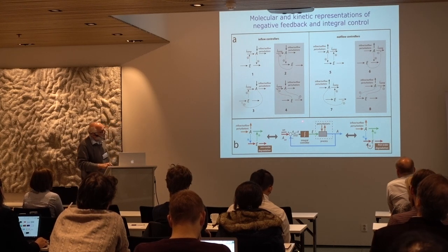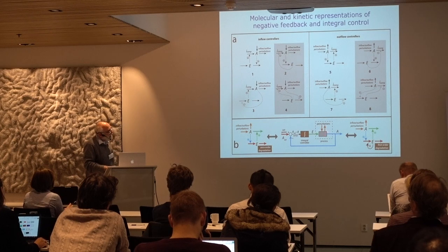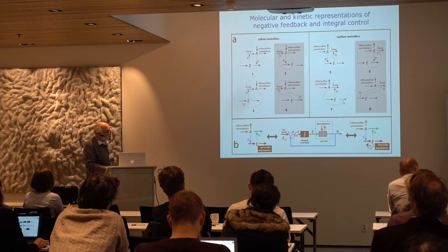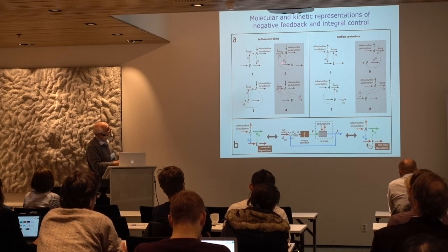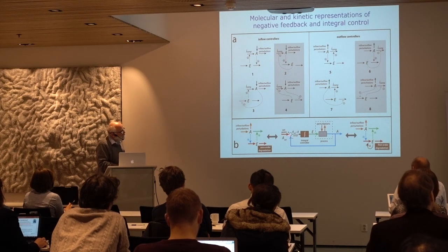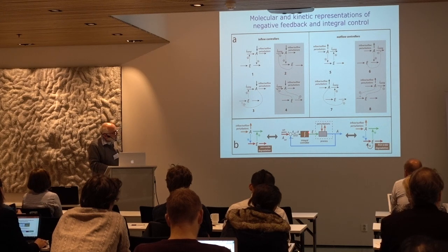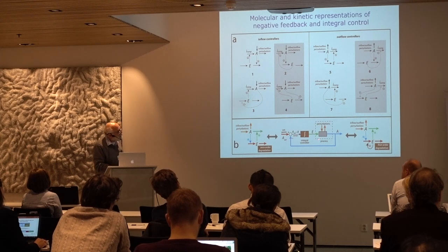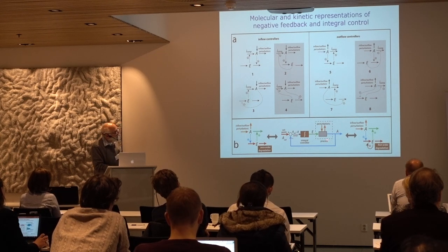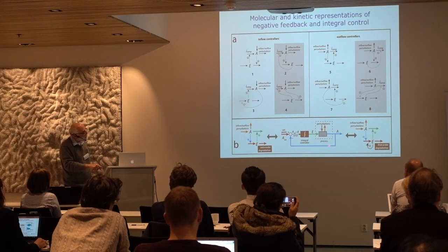What you see here below is how control engineers would term this: integral control. Integral control is a negative feedback loop where you have the controlled species — in our case A — which feeds back and compares its value to a set point. You calculate the difference from your set point as the error, and then you integrate that error. That integrated error is used to compensate for the perturbations, and A approaches its set point.